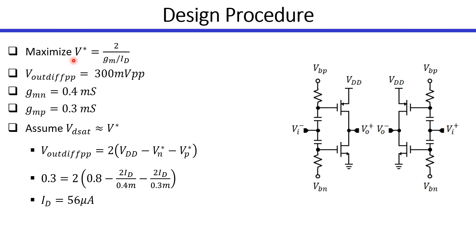Using simulation data, we verify that maximizing V-star achieves our goal of maximizing the amplifier's bandwidth. We can now complete our design procedure. We have a spec on the differential output swing peak-to-peak and on the transconductance of the NMOS and PMOS devices. We can assume the saturation voltage is approximately equal to V-star — both are equal to the overdrive voltage in the square-law model. We write the equation for the differential output swing by subtracting V-star N and V-star P from VDD, then multiplying by 2. From this equation, we have only one unknown, the drain current, so we can solve for it.